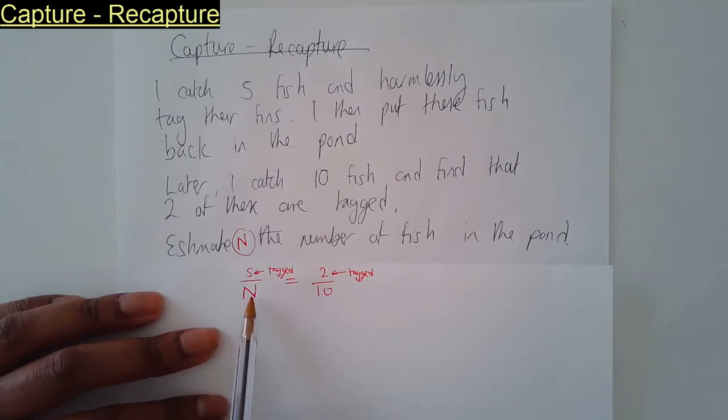Now some of you might think straight away, well yeah, that's going to be 25. Five over 25 is the same as two tenths. But let me show you the working out to get the value of N.